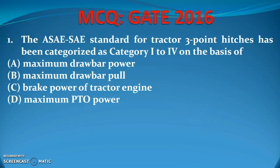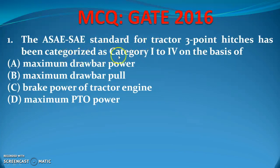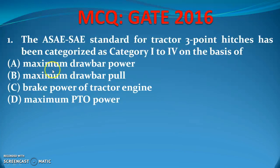The first question is: the ASI or SAI standard for tractor 3-point hitches has been categorized as category I to IV, that is 1 to 4, on the basis of — the choices are maximum driver power, maximum driver pull, drag power, tractor engine, or maximum PTO power.